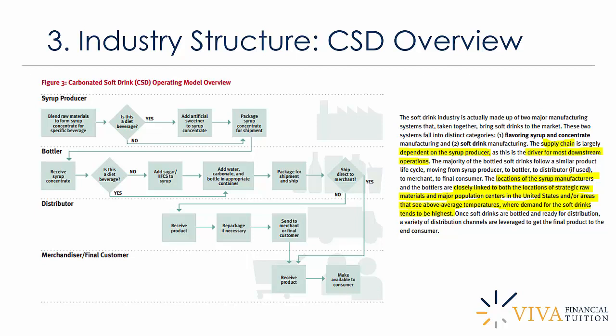In the real-world industry, you actually see a lot of separation, with syrup production being separate from bottling, and a lot of licensing and franchising mediating the relationship between syrup producer and bottler. The supply chain is largely dependent on the syrup producer, as this is the driver for most downstream operations. Locations of syrup manufacturers are closely linked to both the locations of strategic raw materials and major population centres, as well as areas that see above-average temperatures where demand for soft drinks tends to be highest.